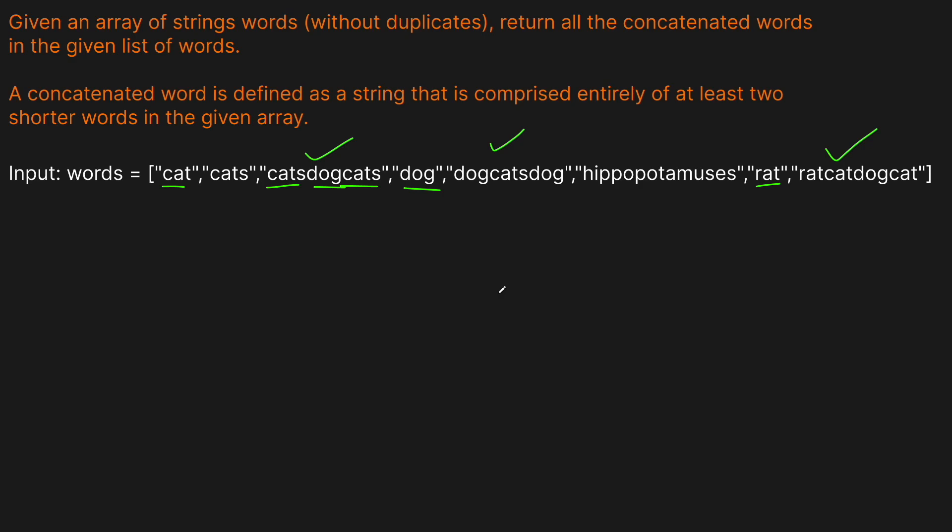Looking at this problem and visually scoping it out, it's quite simple — you can pretty much determine with your eyes which words you can build. But obviously that's not how algorithms work. You might be asking, isn't this really similar to Word Break, where we were essentially doing the same thing? And you're right — it is basically the same thing, except this time we're not trying to separate a big word, we're actually trying to make a big word from other words. So we're essentially doing the exact opposite of what we did in Word Break.